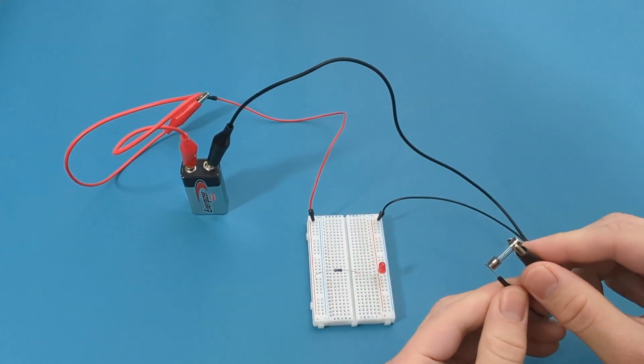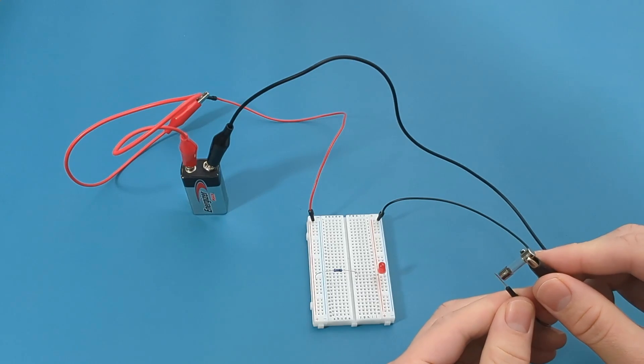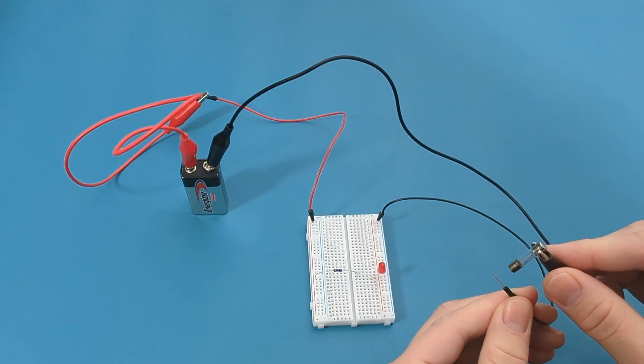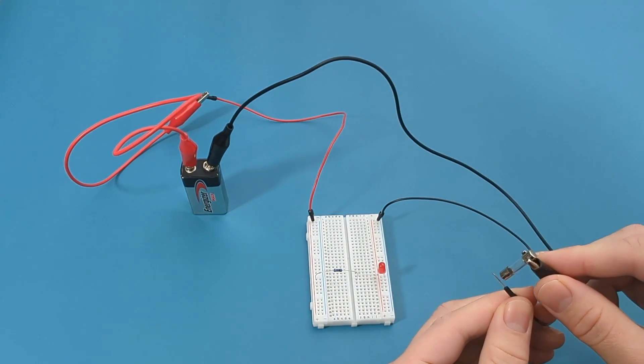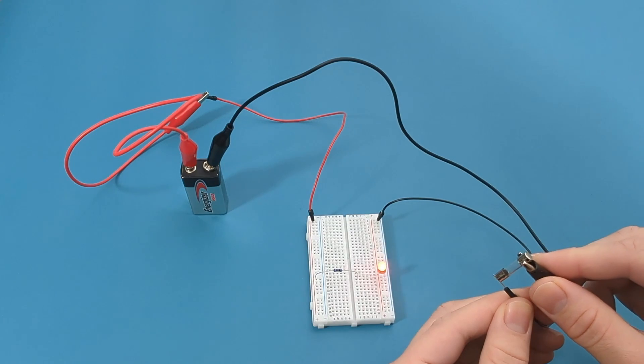If the fuse is good, the red LED should light up. If the LED doesn't light up, the fuse is broken and should be replaced. I hope this video has demonstrated how to test a fuse without a multimeter.